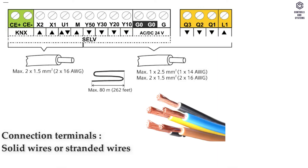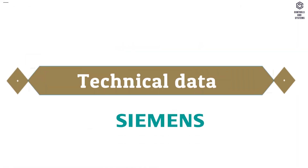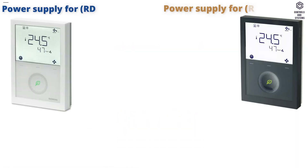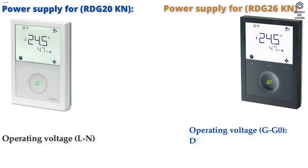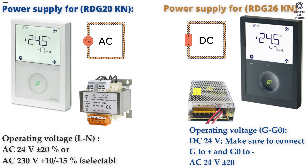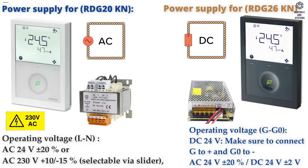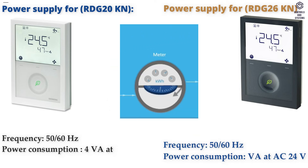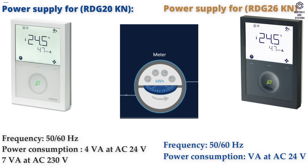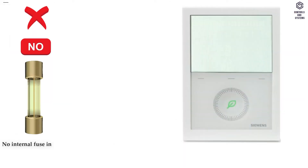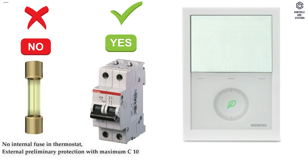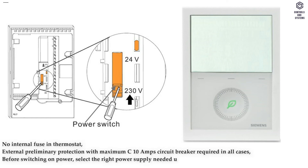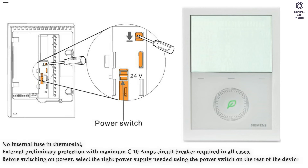Connection terminals accept solid wires or stranded wires with wire end sleeves. Technical Data — Power Supply for the RDG20KN model: Operating Voltage L&N is AC 24V ±20% or AC 230V +10/-15%, selectable via slider. Frequency is 50 or 60Hz. Power consumption is 4VA at AC 24V and 7VA at AC 230V. There is no internal fuse in the thermostat. External preliminary protection with a maximum C10 Amps circuit breaker is required in all cases. Before switching on power, select the right power supply using the power switch on the rear of the device.